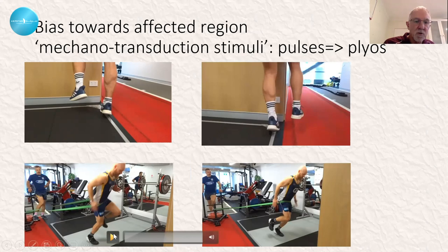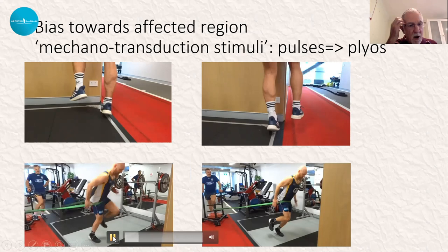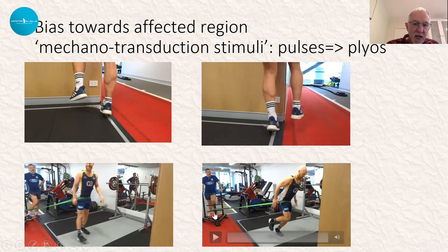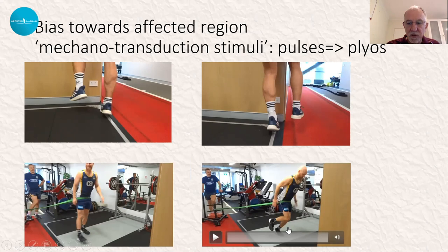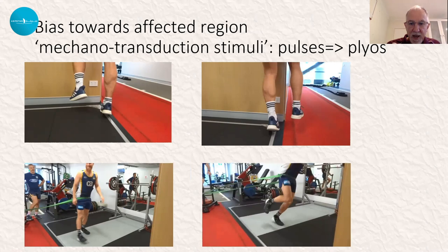We then wanted to take that further to hopping. By using band resistance, we get excellent activation of both peroneals and lateral soleus compartments by hopping against a band at 45 degrees. Then to get the medial aponeurosis, we simply reverse it to the other side — and you'll see repeated hopping here; this is a real burner for the medial calf aponeurosis.